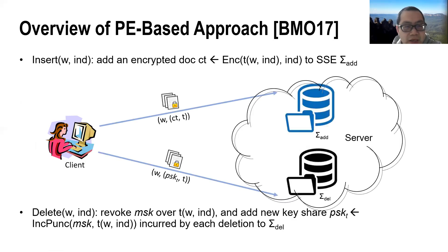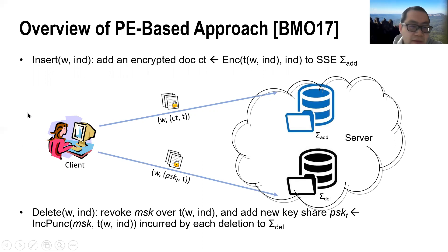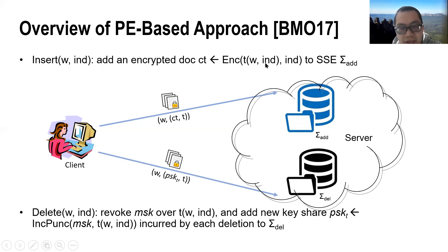Our starting point is the puncturable encryption-based approach. Let's first recall how this approach works and what makes it achieve only Type 3 backward privacy. The high-level idea is to use two forward private SSE instances to achieve backward privacy. More specifically, to insert a document-keyword pair, the client first generates an associated tag and then generates a ciphertext of the document identifier and this tag.